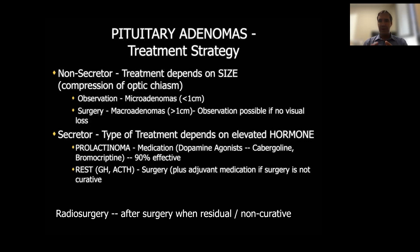For prolactinomas, medication is the first line of treatment with exceptions. For growth hormone-secreting tumors causing acromegaly and ACTH-secreting tumors causing Cushing's disease, surgery is the first line of treatment. Medication is used beforehand only to improve symptoms and optimize severely affected patients, but practically these patients go to surgery as a first option. If they are not in remission after surgery, they will need medication afterward.